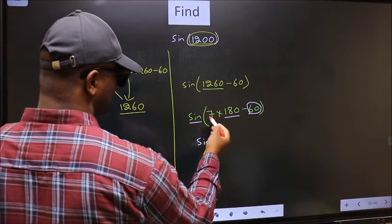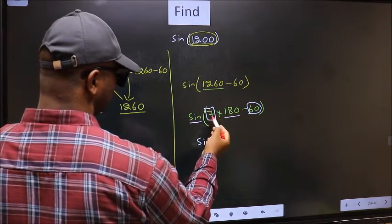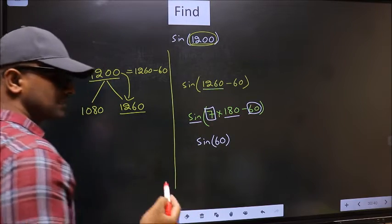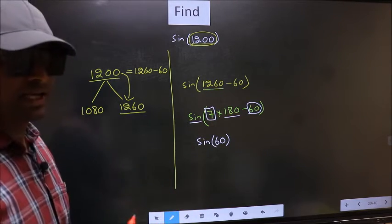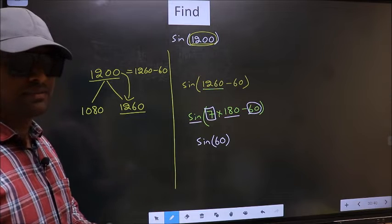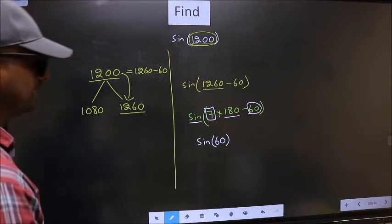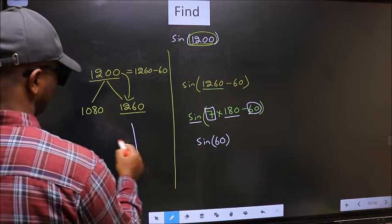That is 7. And 7 is odd. And all the odd multiples of 180°, they lie either in the second or in the third quadrant.